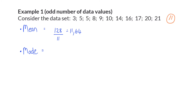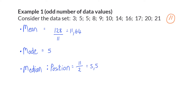The mode is the most frequent value, and here that is 5. To determine the median, the data is already ordered, so we find the value exactly in the middle. With an odd number of values, we take 11 divided by 2 to get 5.5, meaning the sixth value is the median, which is 10. The mean and median are both 10 or bigger, while the mode is only 5, showing that the measures of central tendency are not accurate enough on their own to make good decisions.